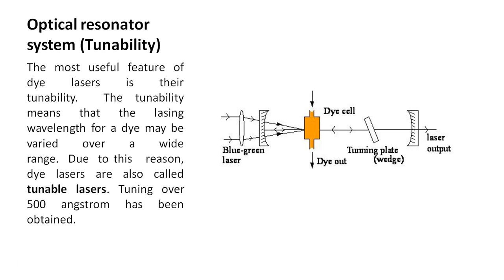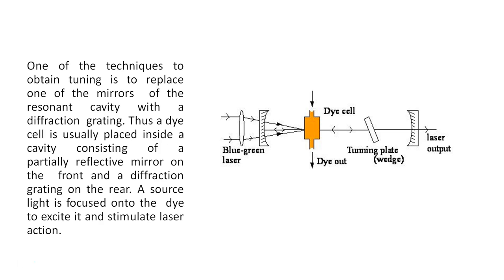Optical resonator system and tunability: the most useful and powerful feature of dye lasers is their tunability. Tunability means that the lasing wavelength for a dye may be varied — it can be tuned over a wide range. Due to this reason, dye lasers are also called tunable lasers. Tuning over 500 angstroms has been obtained. One technique to obtain tuning is to replace one of the mirrors of the resonant cavity with a diffraction grating.